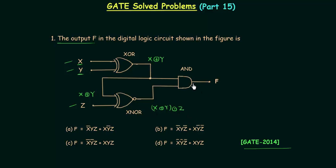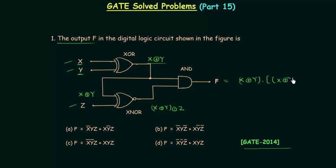Now we find the final output f, which is the output of an AND gate. The two inputs are x XOR y and (x XOR y) XNOR z. So f = (x XOR y) AND ((x XOR y) XNOR z). This is the final output but it is not yet minimized.